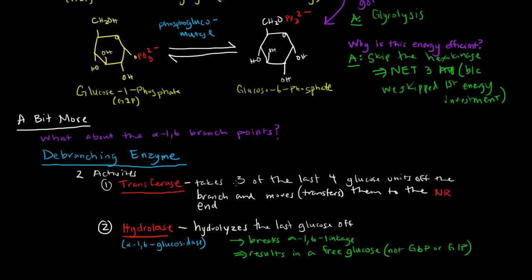So basically, if we're on a particular branch point and we've nicked off a bunch of different glucoses, once there are four more, a transferase takes three of those last four off of the branch point and then transfers them over to the non-reducing end. So once those three are attached to the non-reducing end, then they can be further taken off by glycogen phosphorylase.